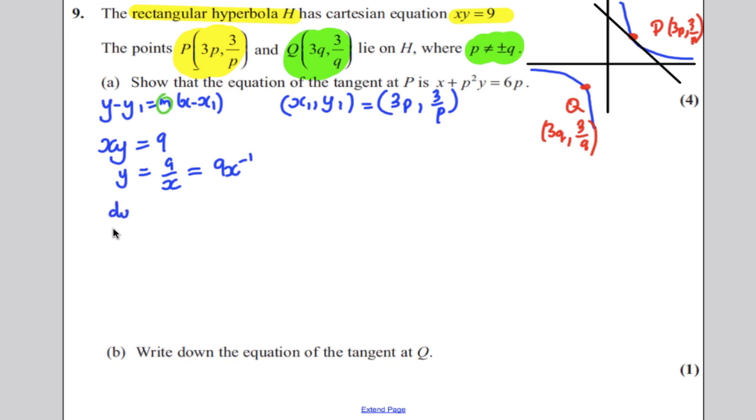Therefore, dy/dx, the way you differentiate polynomials, you can bring down the negative 1 and reduce the power. So it would be -9x⁻². And just what does that mean before we're going to substitute into it? It means -9 divided by x².